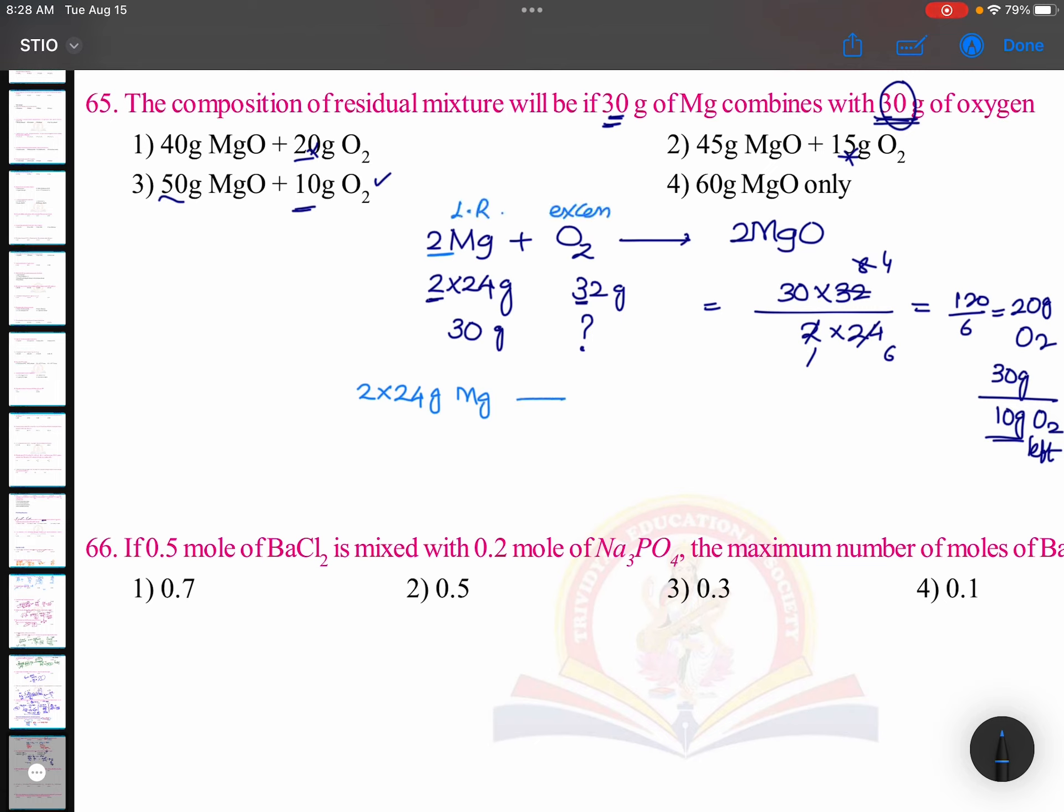So don't calculate according to excess reagent, do on the concept of limiting reagent. 2 moles of magnesium gives 2 moles of magnesium oxide. Molecular mass is 40, magnesium 24, oxygen 16. Then here given to us is 30 grams.